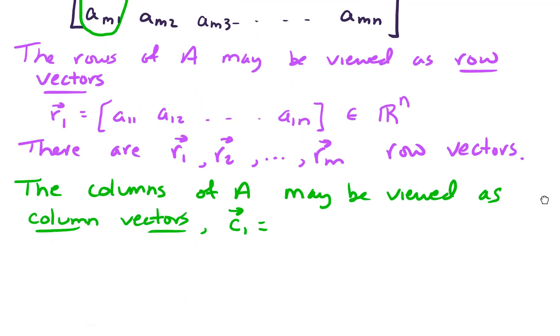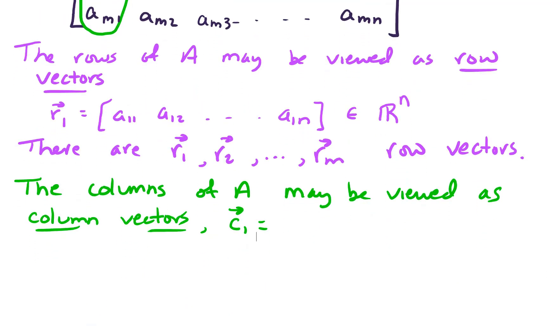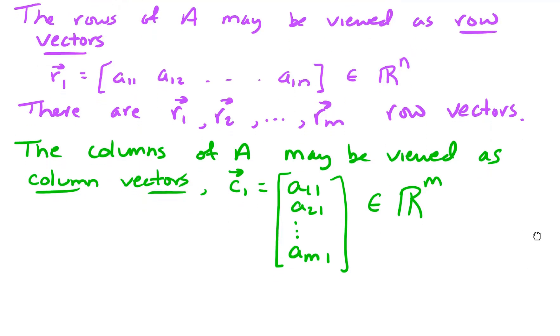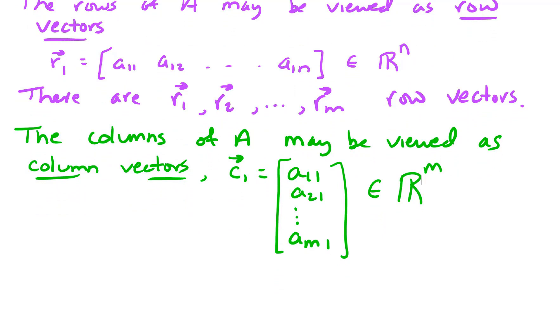So let's write down what C1 would look like. C1 is a column vector, and it starts with A11, A21, all the way down through AM1. So this is an element of R^m. And we know that there are n of these column vectors. So we'll label them C1, C2, all the way up through C sub n column vectors.